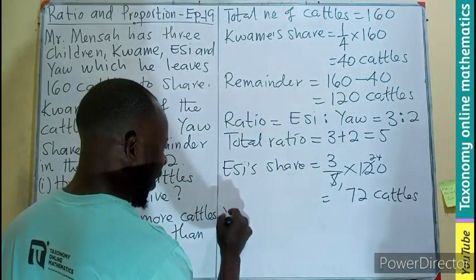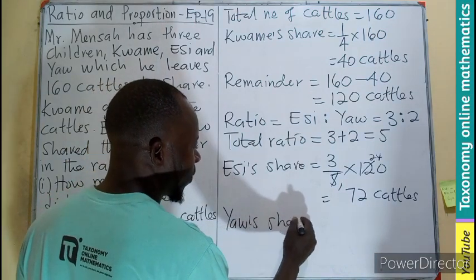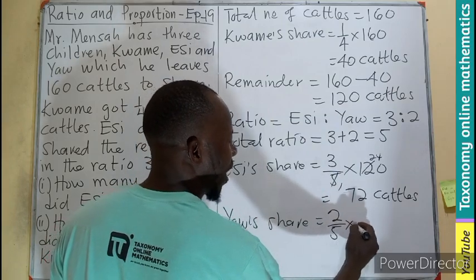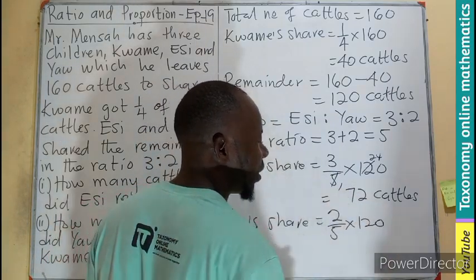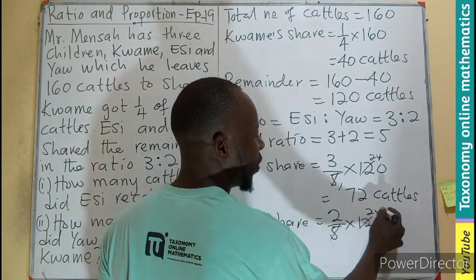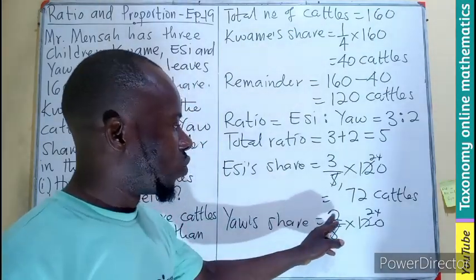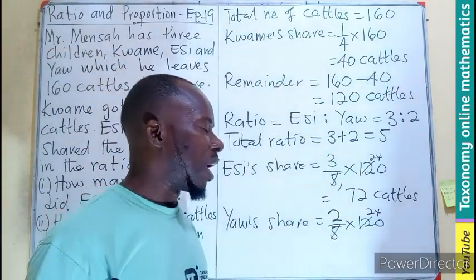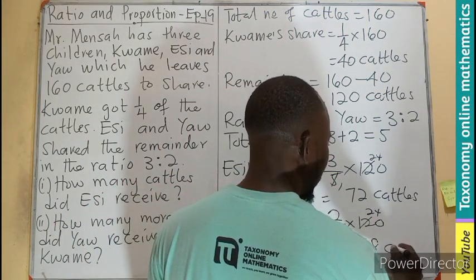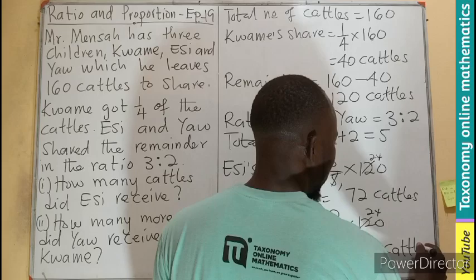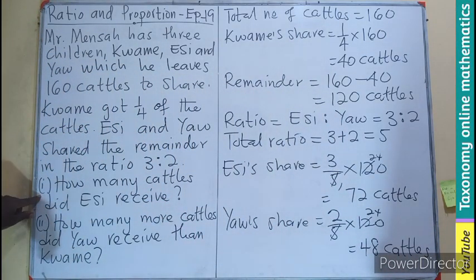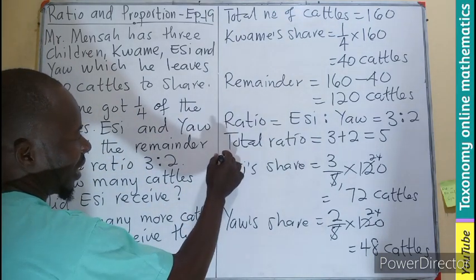We can also find Yam's share directly: the ratio corresponding to Yam is 2 out of 5, times 120 cattle. We already know 5 goes into 120 twenty-four times, so 24 times 2 gives us 48. Therefore Yam receives 48 cattle. This answers the first question — Ac received 72 cattle.